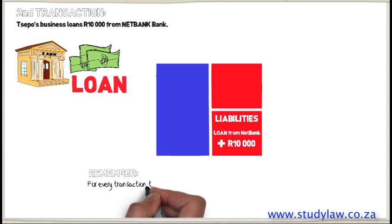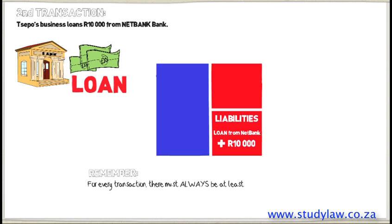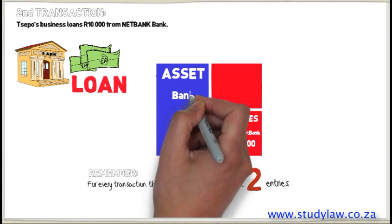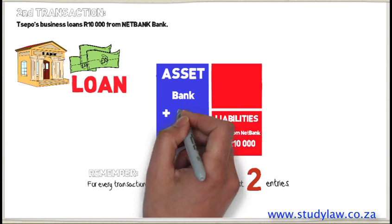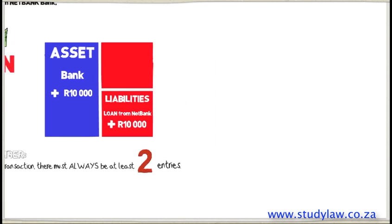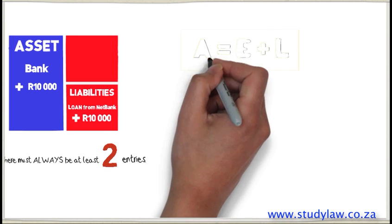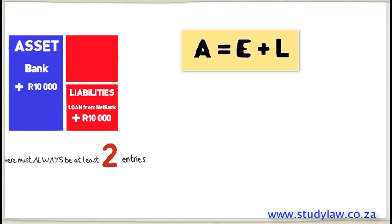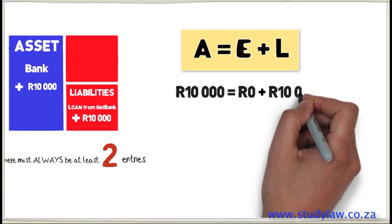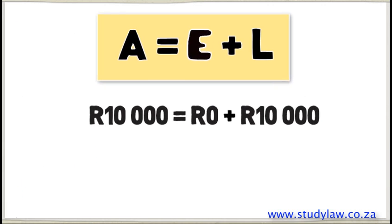Bank is an asset and it will increase by this money. Remember, for every transaction there must always be at least two entries. We can see that both sides are equal to one another. Using the accounting equation — Assets equals Equity plus Liabilities — R10,000 is equal to R10,000 plus zero. Therefore, the accounting equation balances.